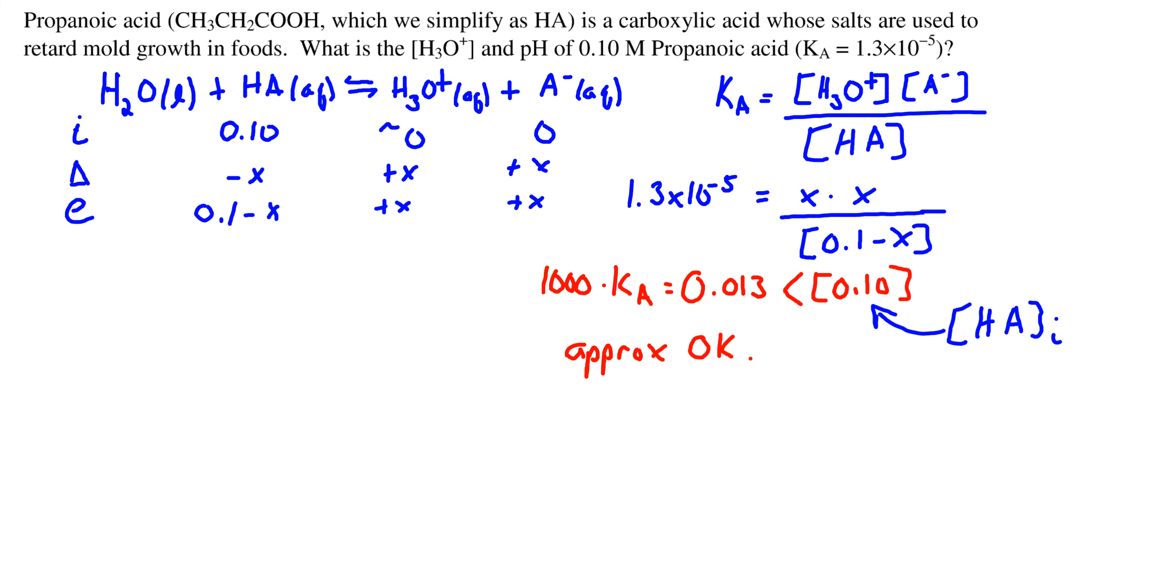One thousand times Ka is 0.013, which is indeed less than the initial concentration of our acid, so our approximation is okay.